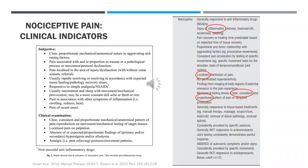A relative dominance of nociceptive pain may be identifiable from a range of clinical indicators. These include a clear, proportionate mechanical-anatomical nature to aggravating and easing factors, pain localized to an area of injury or pathology, and pain that usually resolves in accordance with expected tissue healing and pathology recovery times.